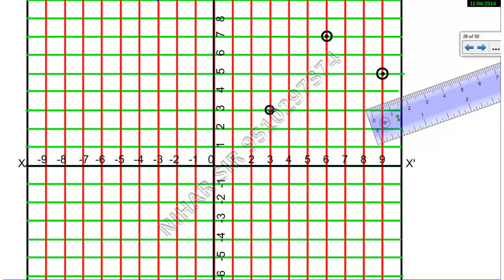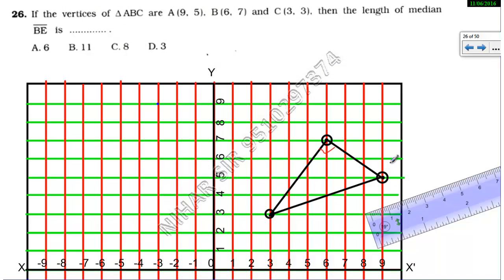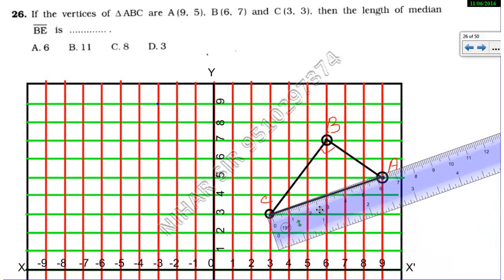Let's connect it. It seems like a right angle triangle. So we have A at (9,5), B at (6,7), and C at (3,3). We need to find BE median. The median will divide the opposite side, or let's say the hypotenuse, into two equal parts. Whatever its measurement is, it will be divided into two equal parts.